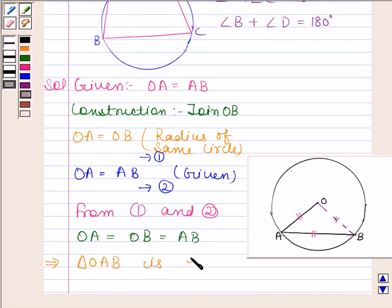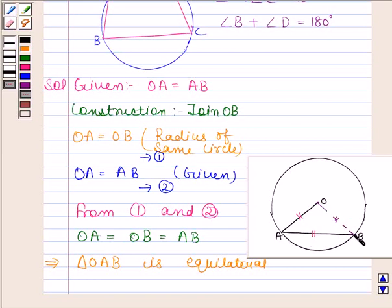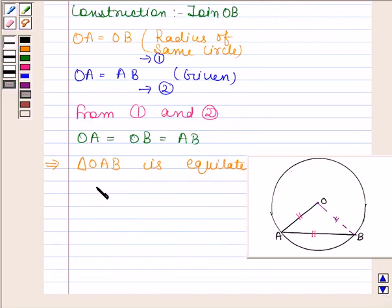This implies triangle OAB is an equilateral triangle. Since triangle OAB is an equilateral triangle, therefore each angle of this triangle is 60 degrees. And hence angle AOB is equal to 60 degrees.